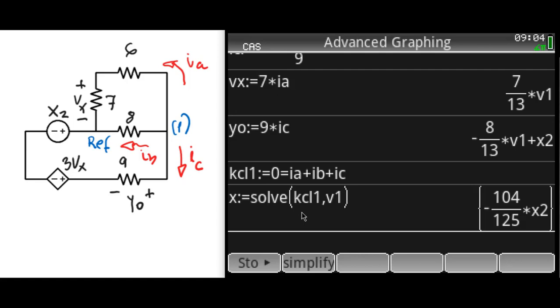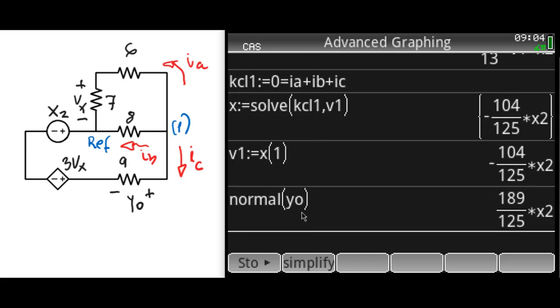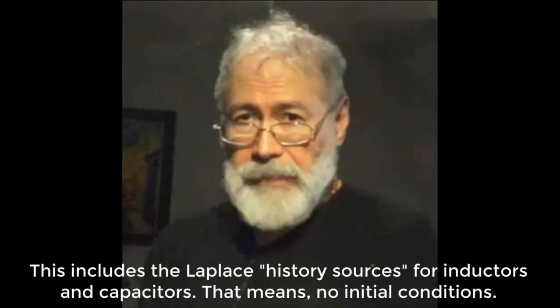We're ready to ask for the normalized version of the output Y0, which comes out as a function of the only independent source X2. If we divide that Y0 by the input we get the transfer function that is exactly the same as we found solving the whole circuit and nullifying the sources X1 and X3, but much faster. This is the explanation why to find the transfer function between an input and the output, we eliminate all the other independent sources in the circuit.